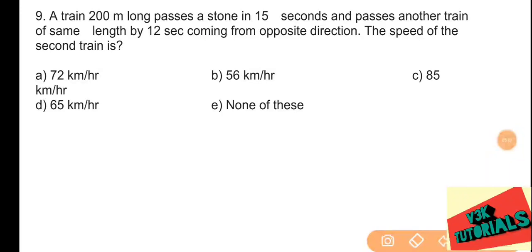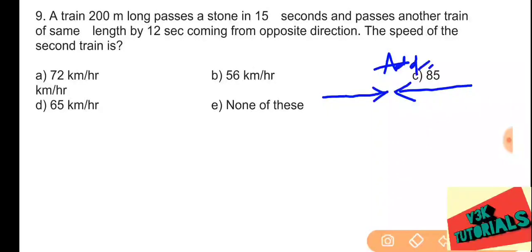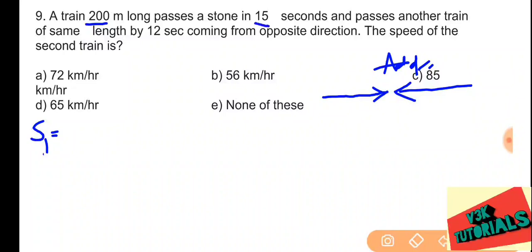Problem number nine: a train 200 meters long passes a post in 15 seconds and passes another train of the same length coming from the opposite direction in 12 seconds. We have to find the speed of the second train. Since they are in opposite directions, we add the speeds. Speed of the first train equals distance divided by time: 200 divided by 15 equals 40 by 3 meters per second.